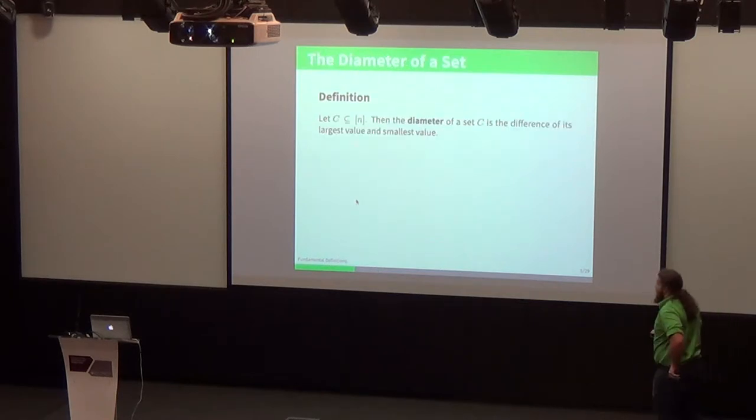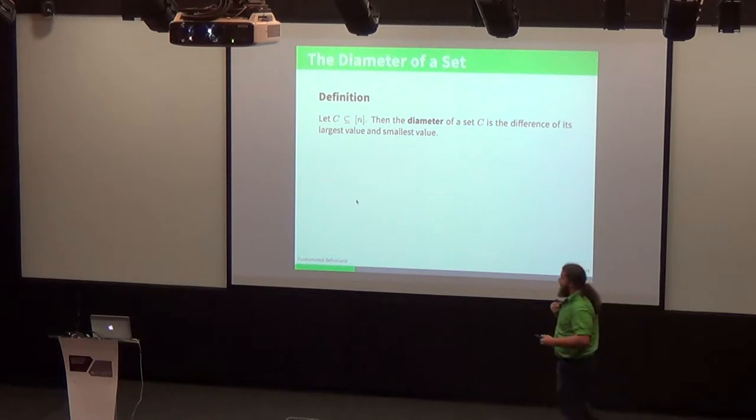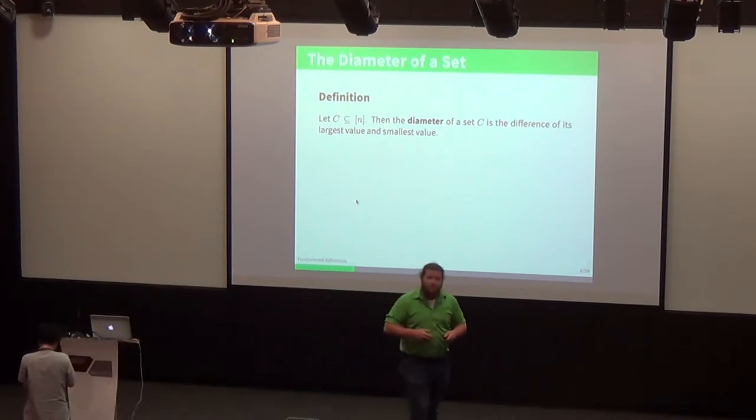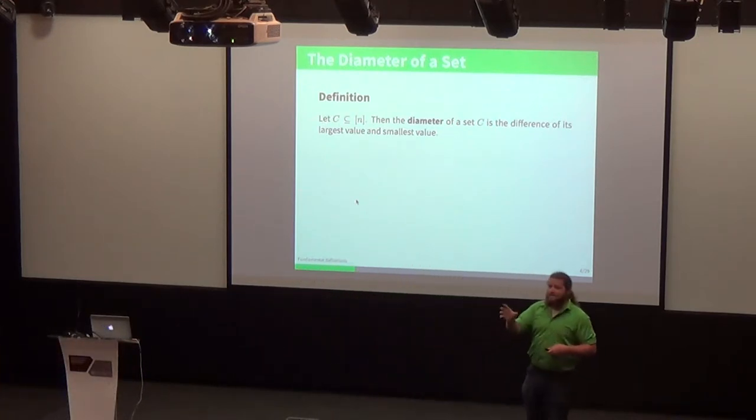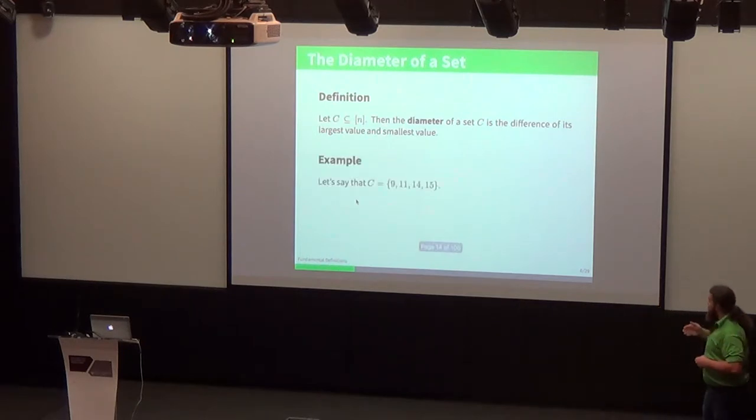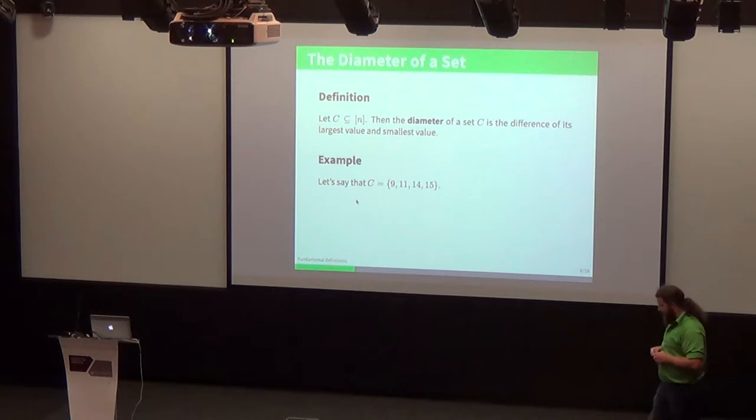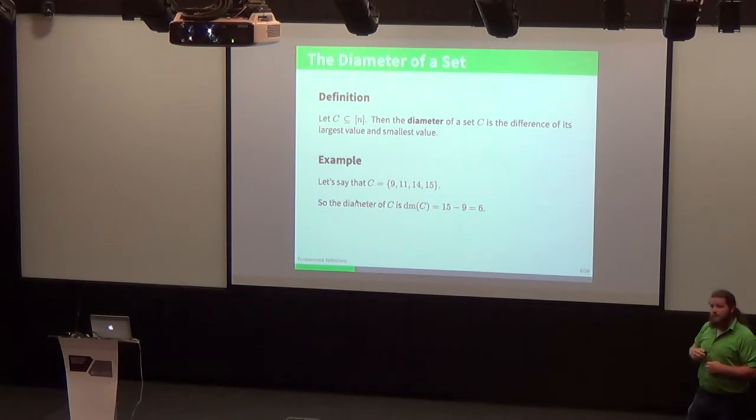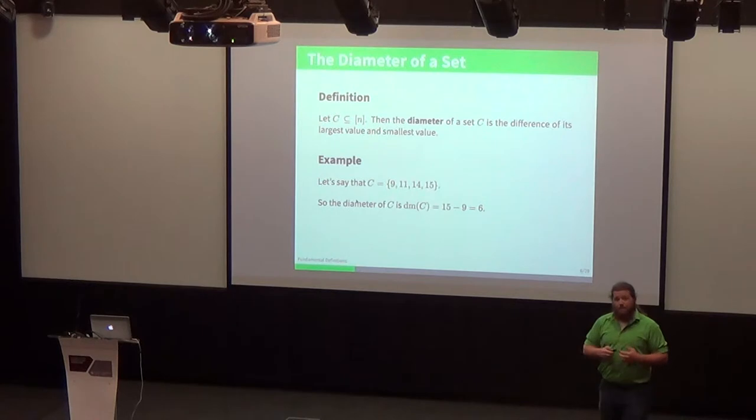The final definition is diameter, which refers just to the distance between the endpoints of our sets. If we have the set C containing 9, 11, 14, and 15, we say that its diameter is just the largest element subtract away the smallest element. So here we have 15 minus 9, so our diameter would be 6.